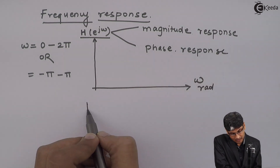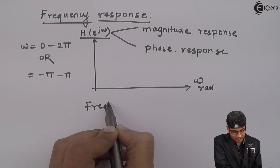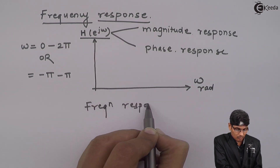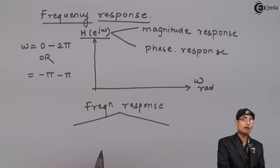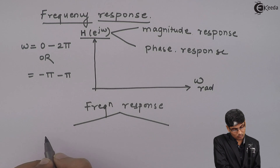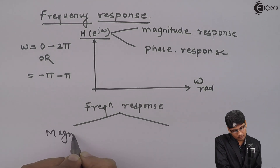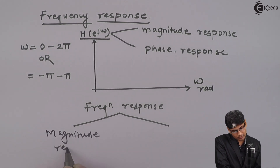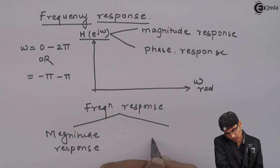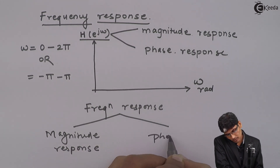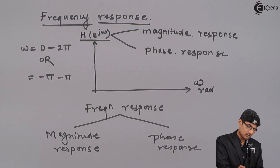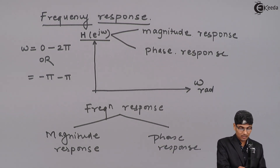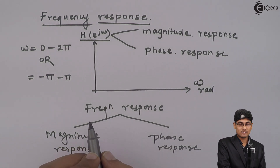We can say that a frequency response has actually two responses, or it is a combination of two responses. One is called the magnitude response and the second is called the phase response. The phase response and magnitude response combine together to give us a frequency response.